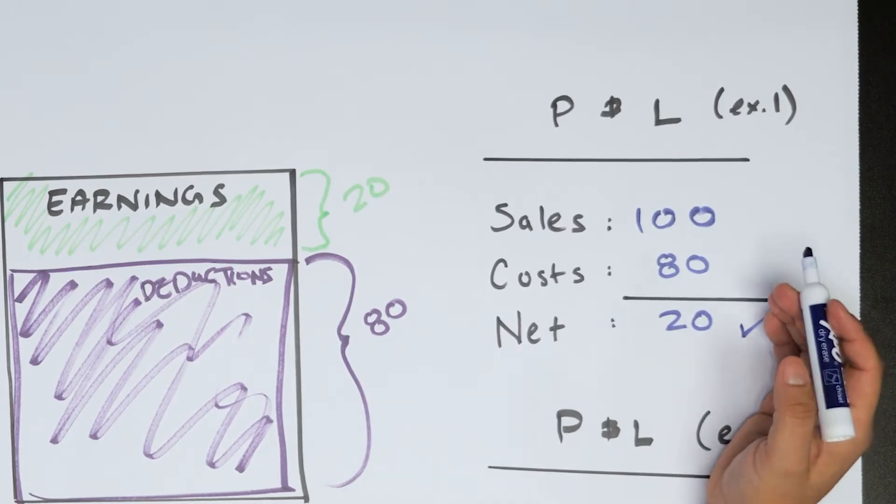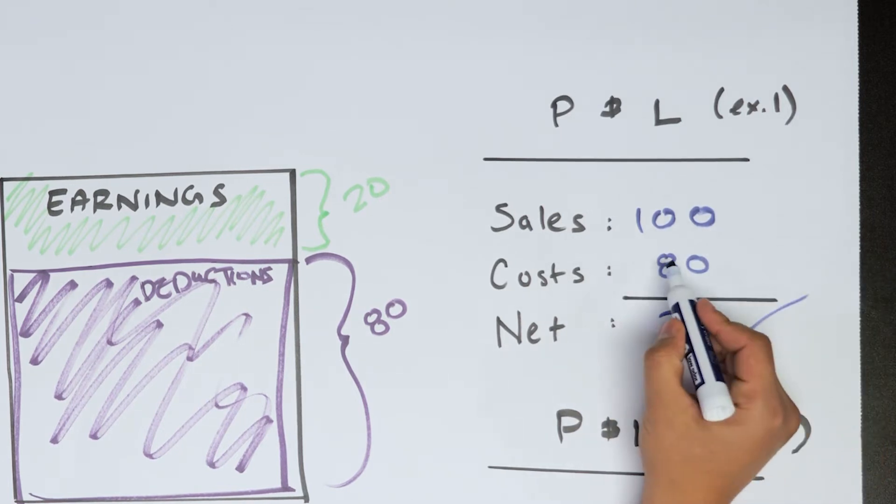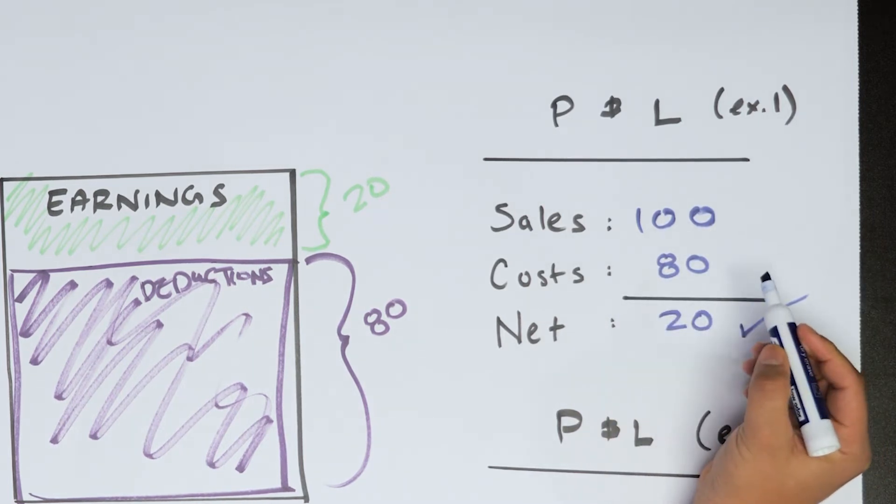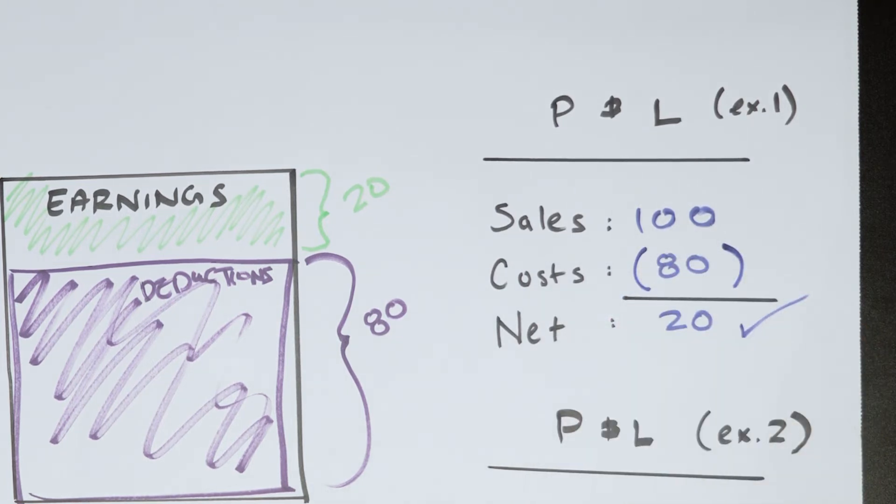Now, one thing I want to highlight is that from an accounting standpoint, sometimes you'll see costs show up as negative. You won't see the line denote the negative. What you'll see are parentheses. So I'm going to use that because I want to get used to that showing up in how we present the numbers. And it'll be important for the next example.